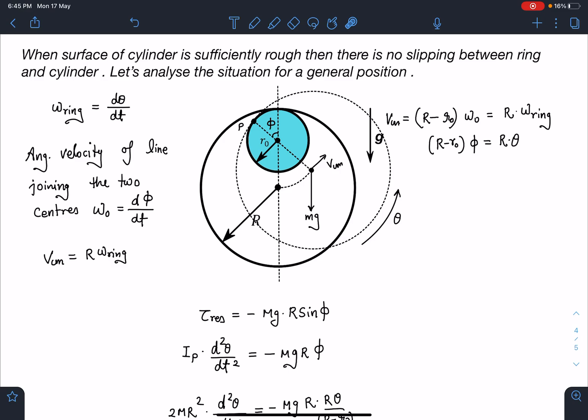When the surface of cylinder is sufficiently rough, then there is no slipping between the ring and the cylinder. Then we can analyze the situation at any general position. So initially this dark diagram which is given here, this is the initial position. So if we slightly disturb it, then the line joining the two centers, it rotates by an angle of φ.